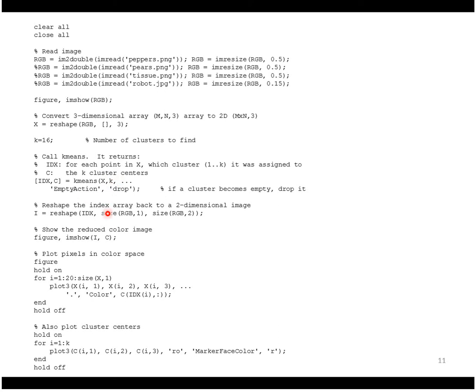Finally we reshape the indices back into an image called i. This displays the image using the color map that we found c here. And then just to visualize that, we plot the pixels in RGB space, only a subset like every 20th pixel, and then also indicate the set of discrete cluster centers on that plot.